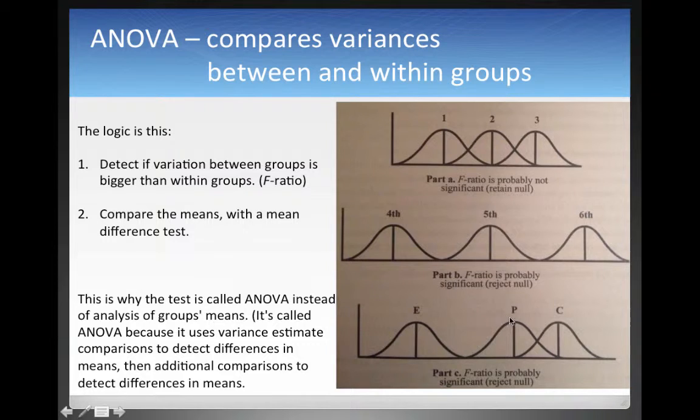Or then here we have three different groups, and we can see these two groups are closer to each other, but then this group here is quite further away. So overall, that between-group variation seems to be bigger than within-group variation.